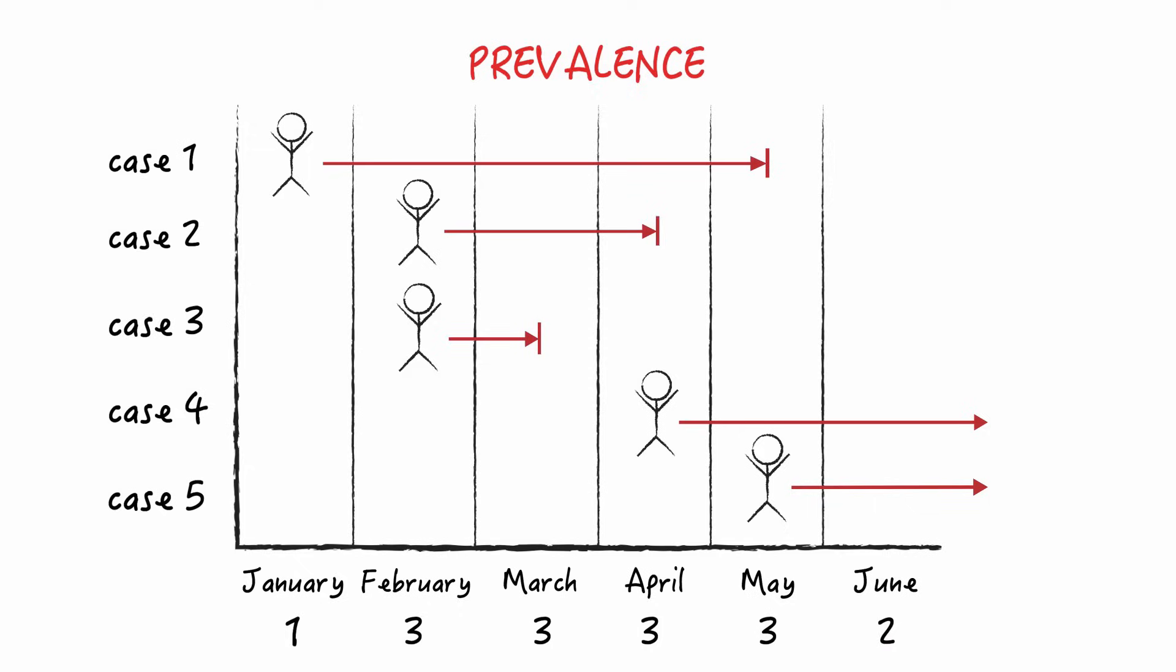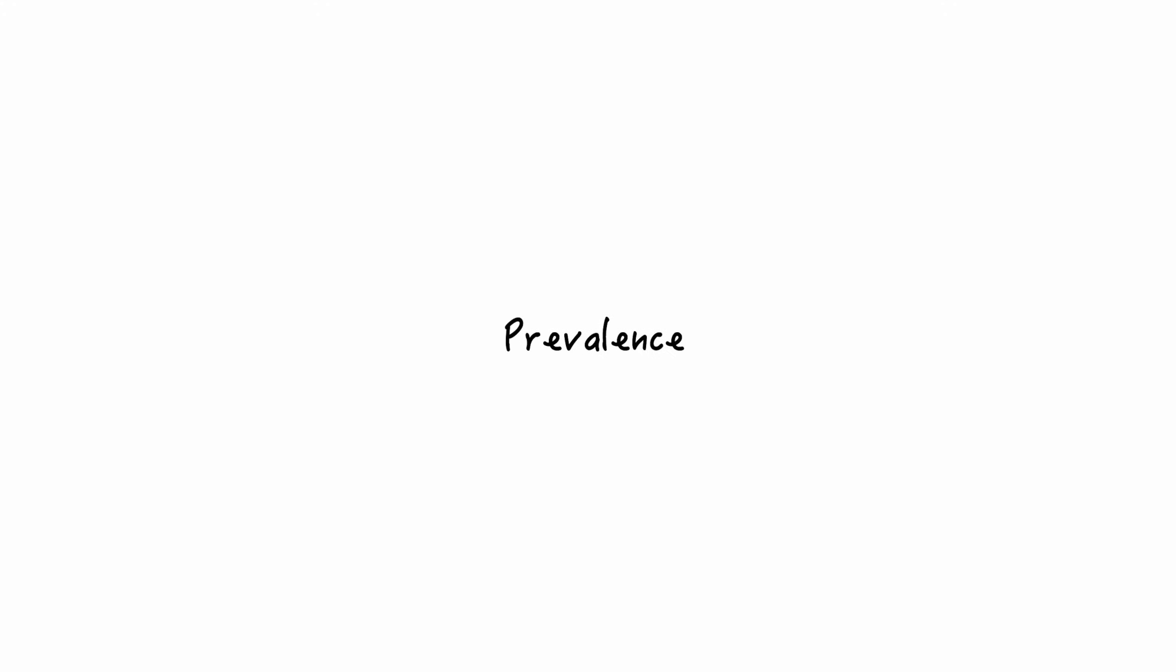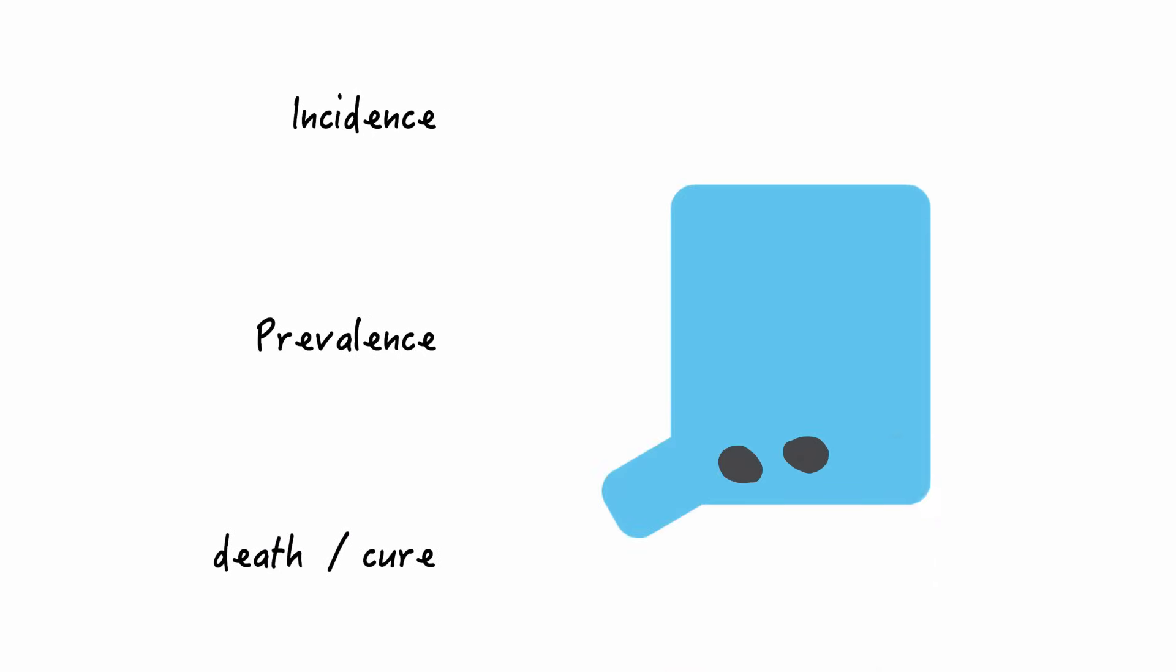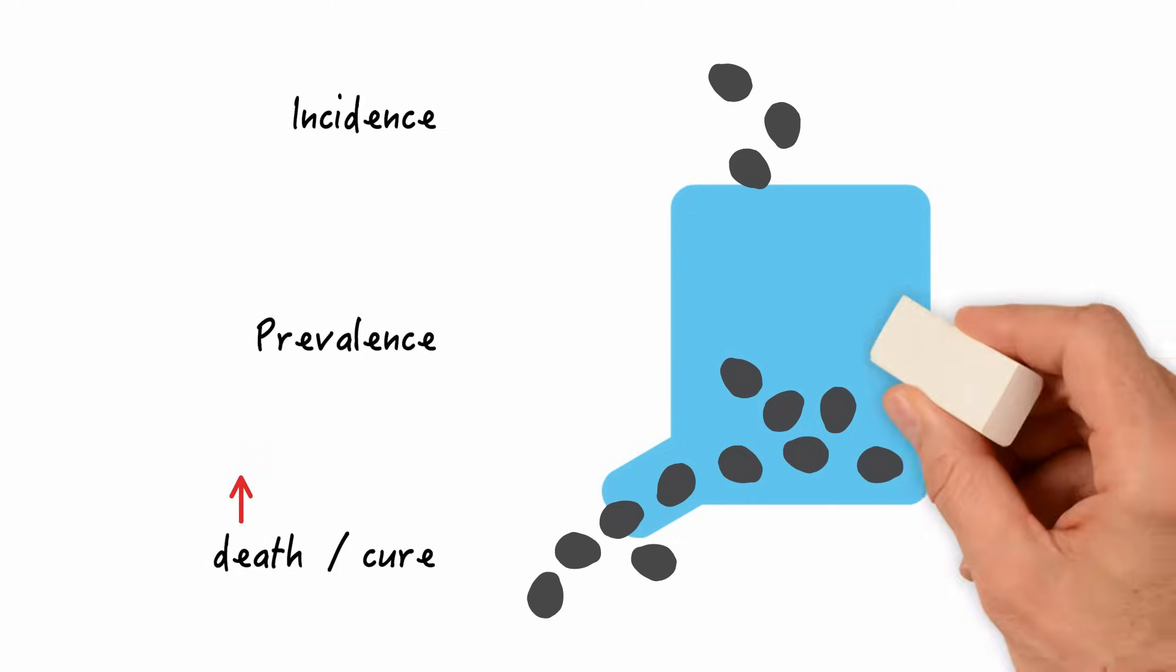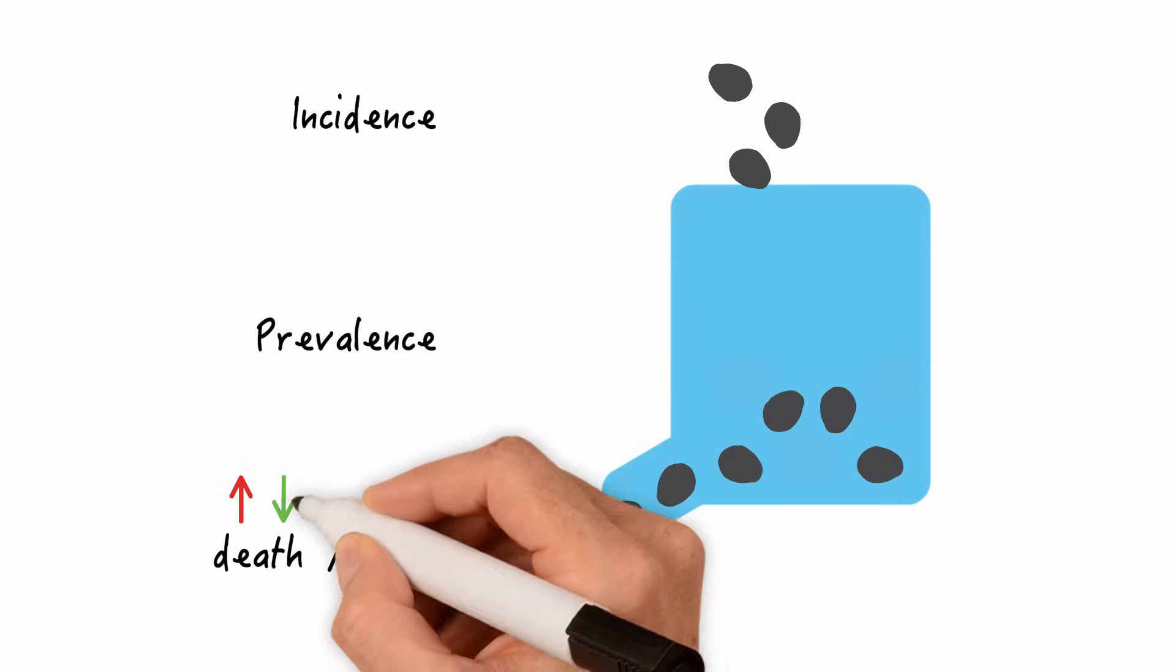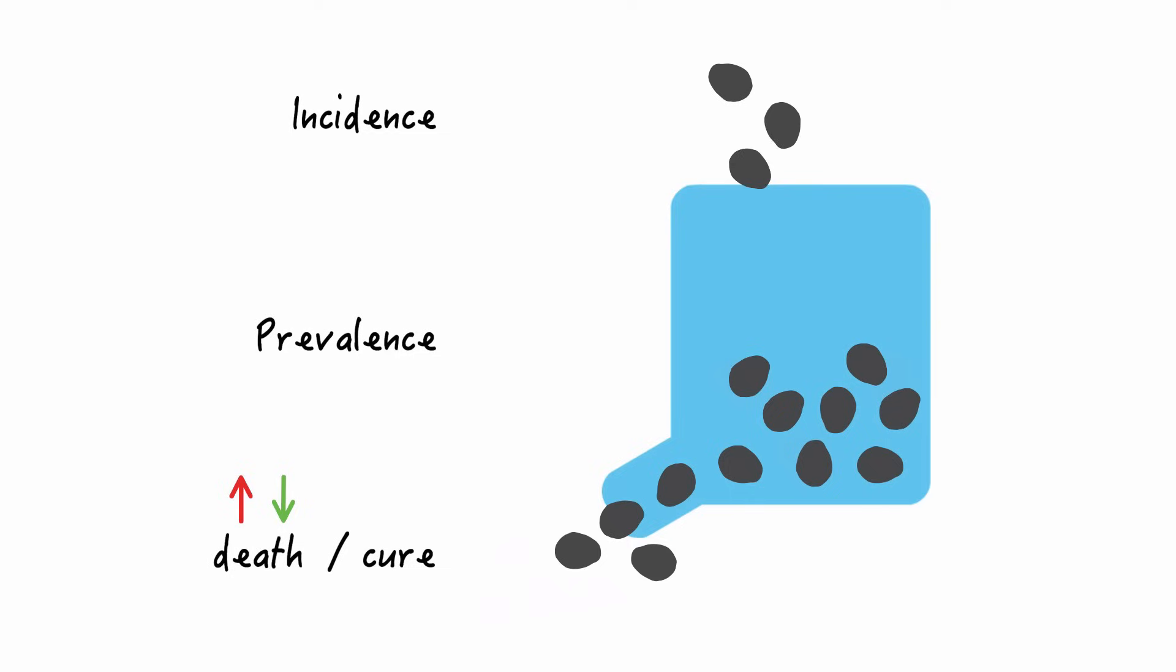So prevalence is determined by how many people join the prevalence pool or the incidence and how many leave the prevalence pool through death or cure. Let us depict that with a vessel full of pebbles. The vessel is filled with pebbles or new cases by the incidence rate and it's emptied by death or cure. This means that if death goes up then more people will leave the vessel and if death goes down then more people will stay in the vessel. And the same thing applies for cure. If more people are cured more pebbles or people will leave the vessel and if cure rate goes down then more pebbles or people will stay in the vessel.